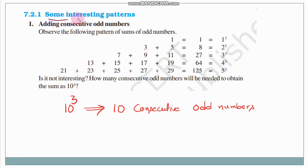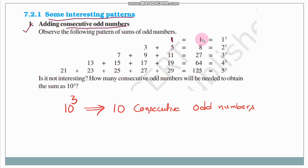Next, let's see some interesting patterns. We will observe these patterns once. The first pattern is adding consecutive odd numbers. When we take 1 consecutive odd number, we get 1, which is nothing but 1³.